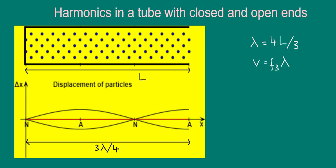Using the wave equation again, we find that the frequency of this harmonic, the third, is equal to 3v over 4L, which is equal to three times the frequency of the first harmonic.